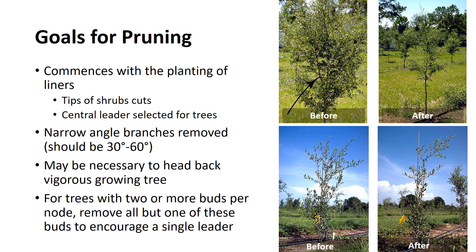In more vigorous species, it may be necessary to head back branches that grow more rapidly than others to keep the crown in balance. If the tree has two or more buds per node, a desirable practice is to remove all but one of these buds. This encourages the maintenance of a single leader.